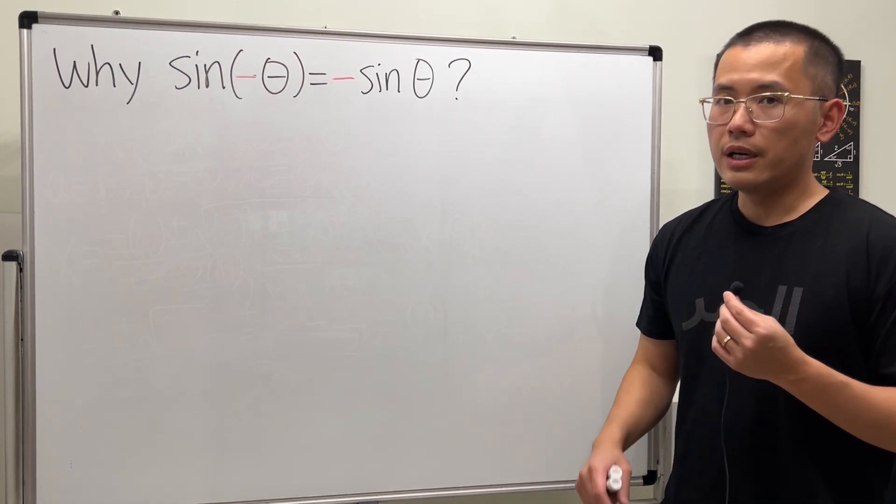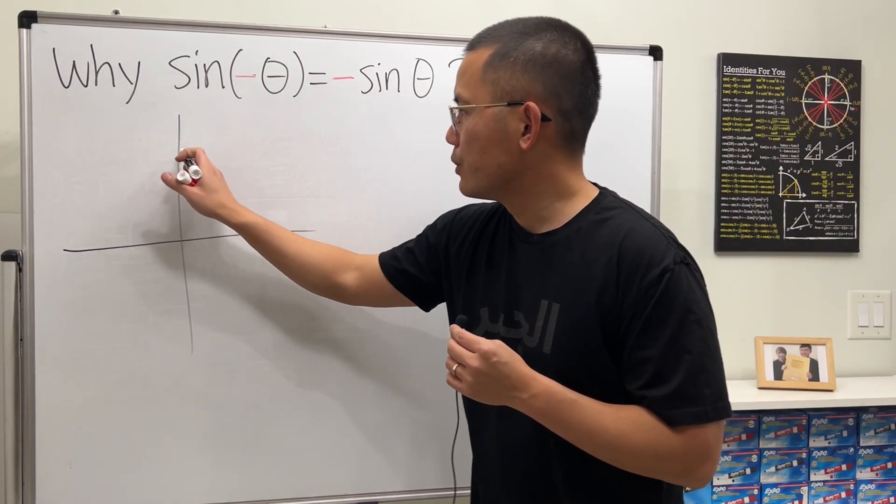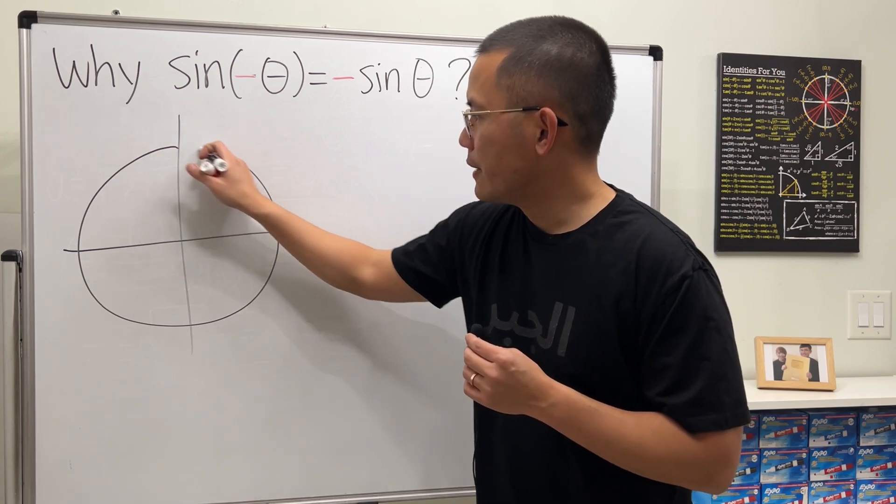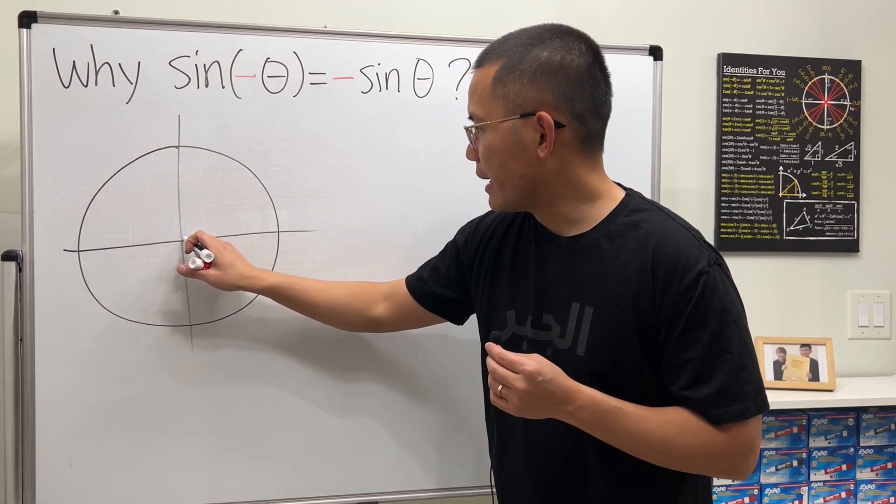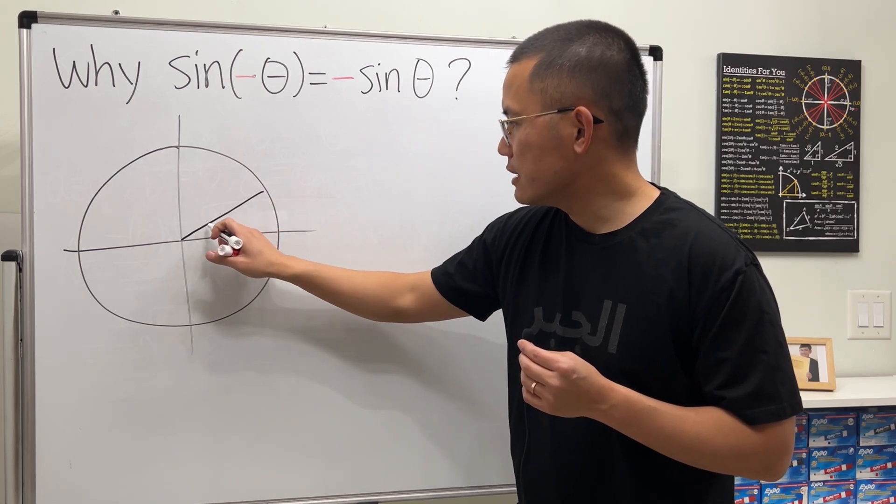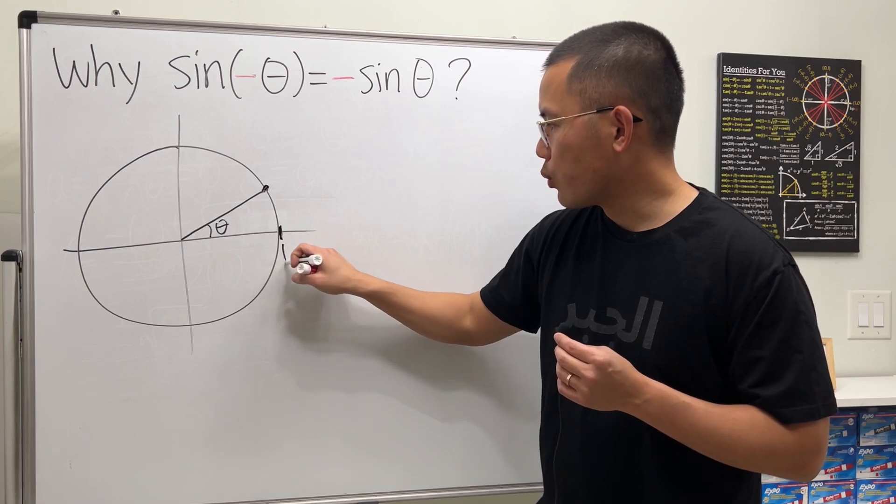Right here, we can use the unit circle to explain it. So let's take a look. Here is our unit circle, like this. And let's just have a theta somewhere. Let's say here is my angle theta. And notice this is my positive angle theta. This is the unit circle, so here is 1.